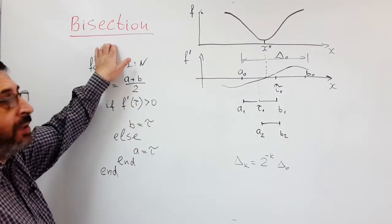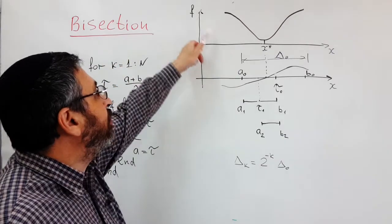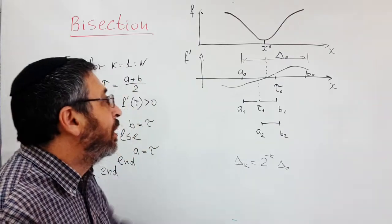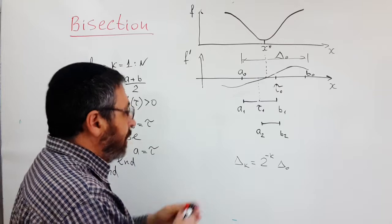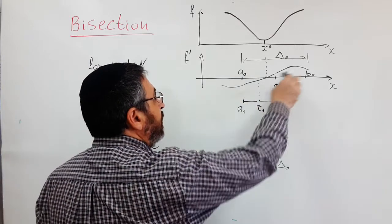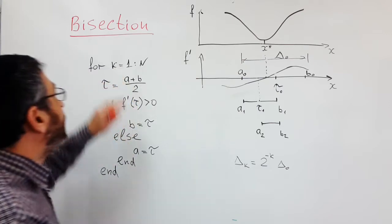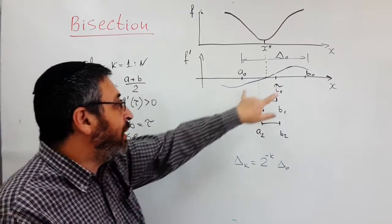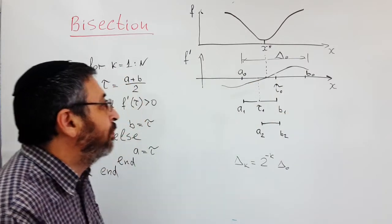Let us talk about the bisection method. Assume that we would like to find a minimum of a function of one variable. To find the minimum of a smooth function is the same as finding zero of its derivative. Bisection is a general method for finding zero or root of a function of one variable.